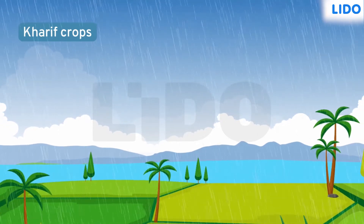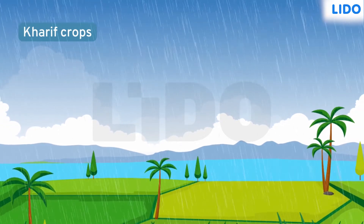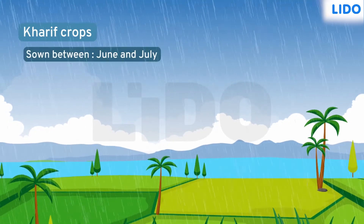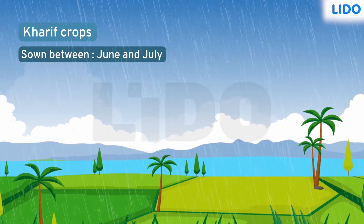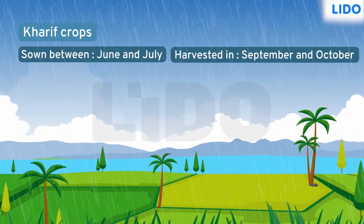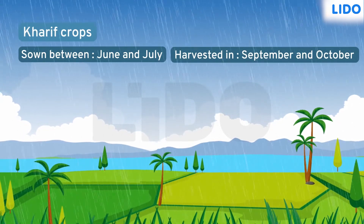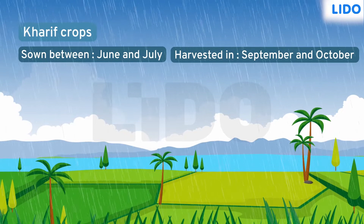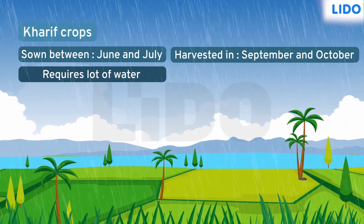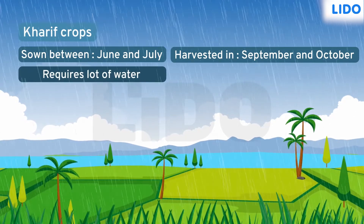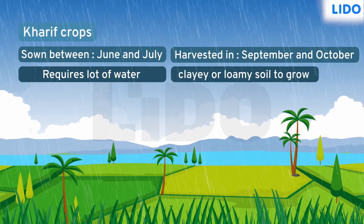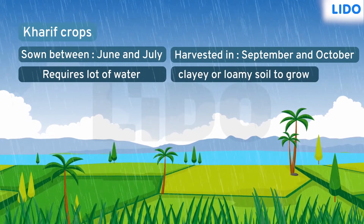Kharif crops are monsoon crops and hence they are sown at the onset of the south western monsoon season between June and July, and harvested in September and October. These crops are grown mainly near the coastal regions of India. These crops require lots of water to grow, so rain water really does help.